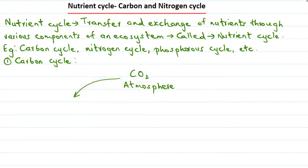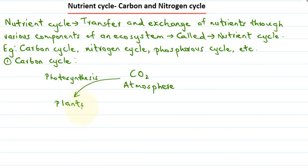Now this carbon dioxide is utilized by plants in order to make food during the process of photosynthesis. So during photosynthesis, carbon dioxide is utilized by plants to make their food. This carbon gets accumulated within the bodies of the plants, and further this carbon enters animals or reaches the animals through the food chain.